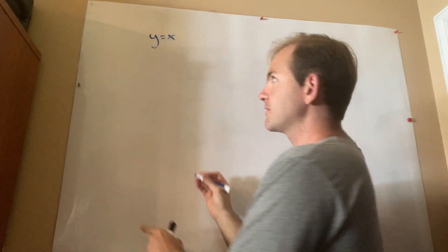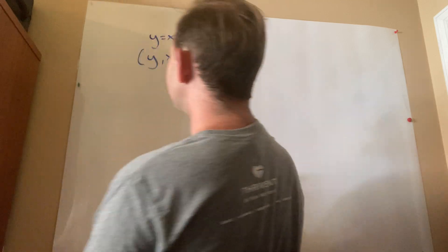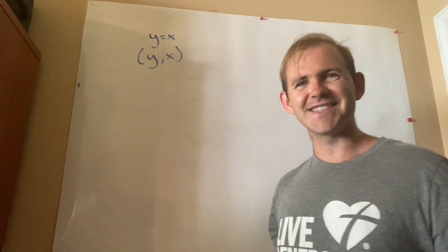So I'm going to write them out for you. For a reflection across the line y equals x, this is your coordinate rule, which I like to think of as switching. It just switches the x and y.